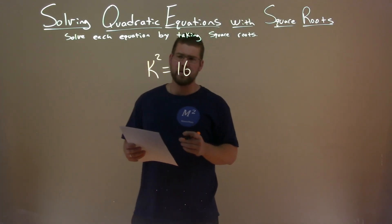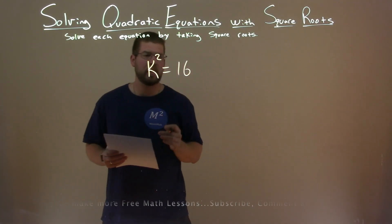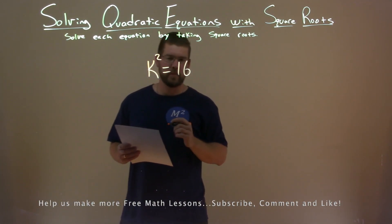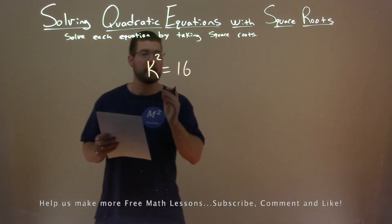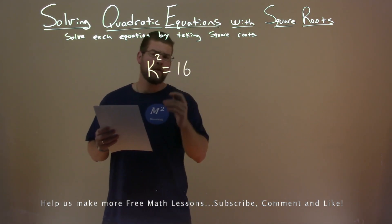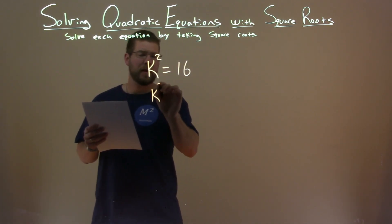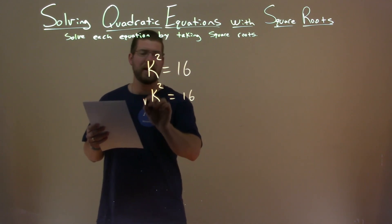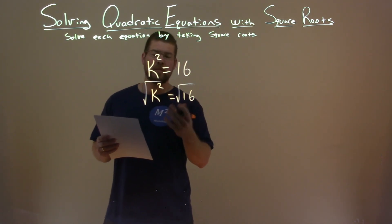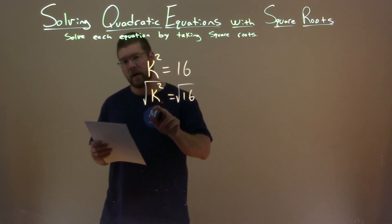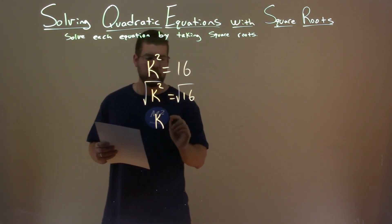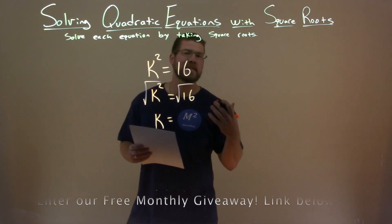We're given this problem here: k squared equals 16, and we want to solve this equation by taking the square root. Luckily, k is by itself already, so this is actually fairly easy. We have k squared equals 16, and we need to take the square root of both sides.